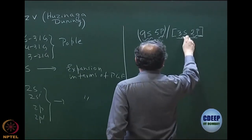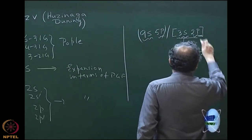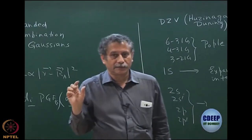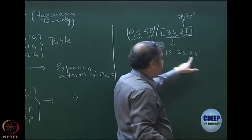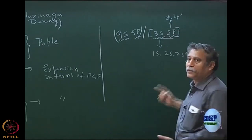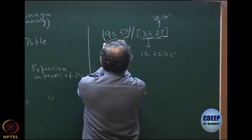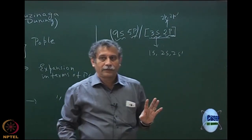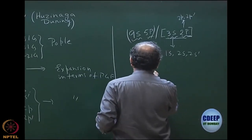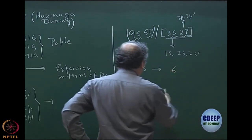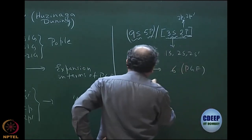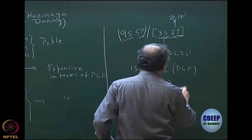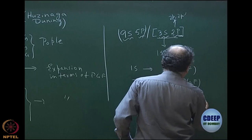The 3s-type contracted functions correspond to 1s, 2s, and 2s', and the 2p-type to 2p, 2p'. Note that these 3 and 2 are not principal quantum numbers — they are just the total count. Out of the 9s primitives, typically 6 are used for 1s, 3 for 2s, with one in common. The 2s' remains uncontracted — just 1 PGF — so 6 + 3 + 1 = 10, but one is shared, giving 9 total.